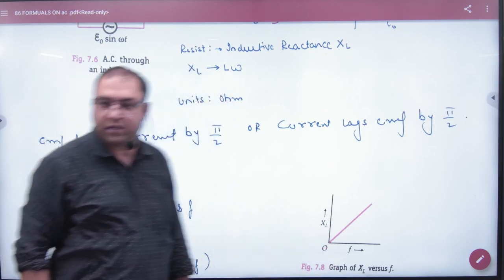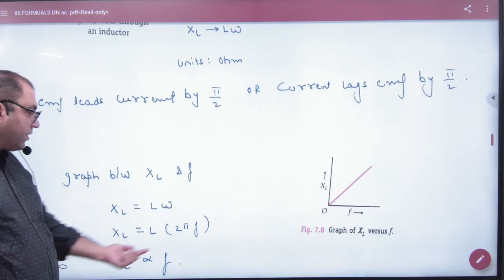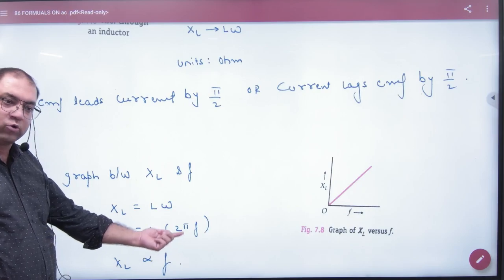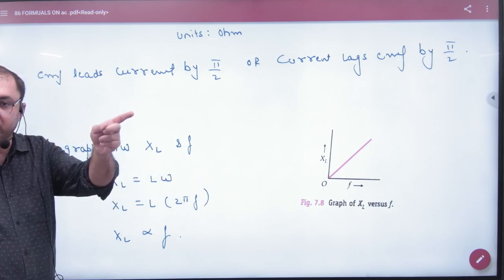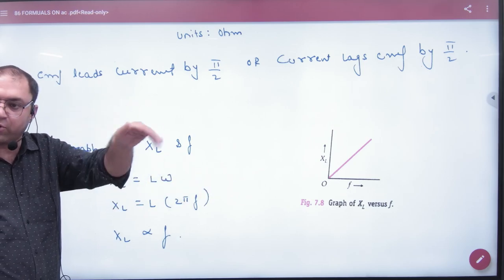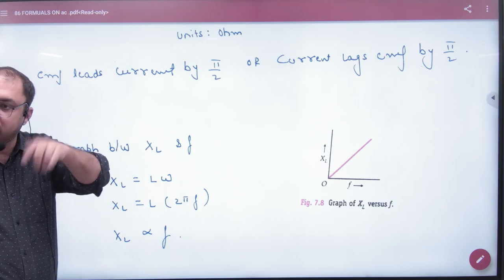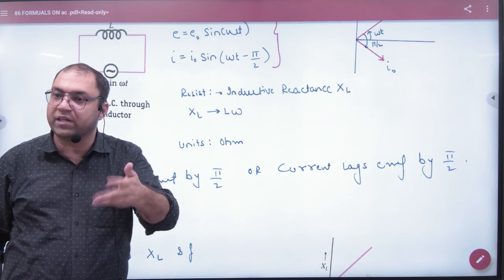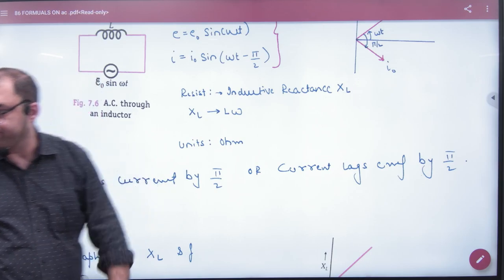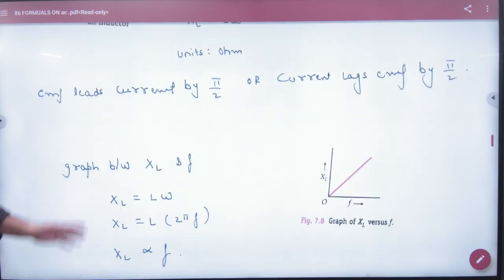XL is L omega. Omega is 2 pi frequency. So XL is proportional to frequency. As much as the frequency of AC, the cycle will be more and the XL will be more. Because if we change the current quickly, the resistance will be more than the inductor. So you should know this.